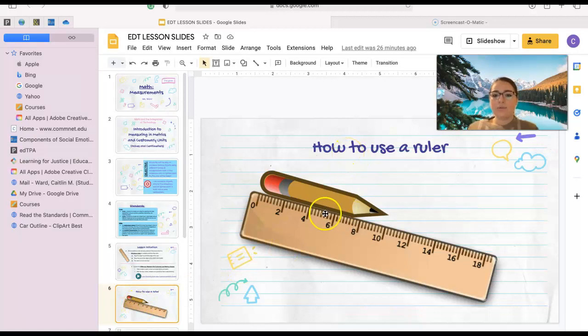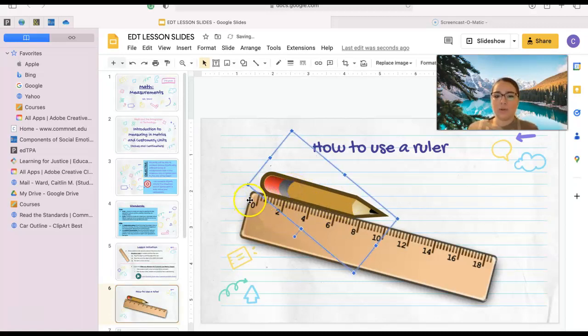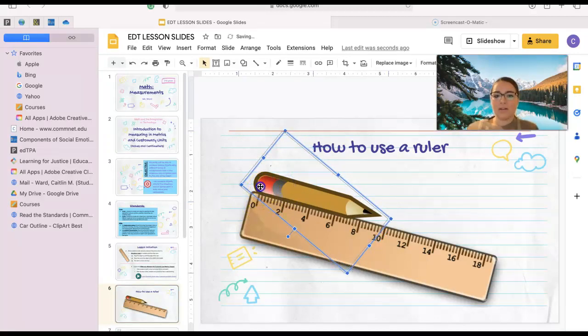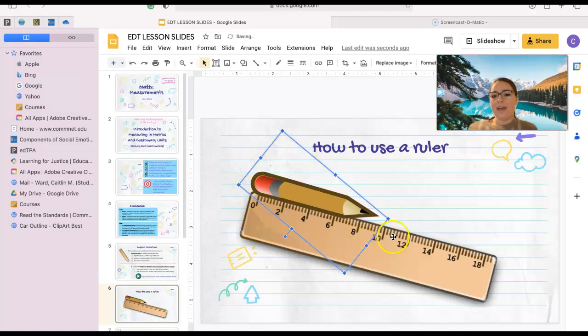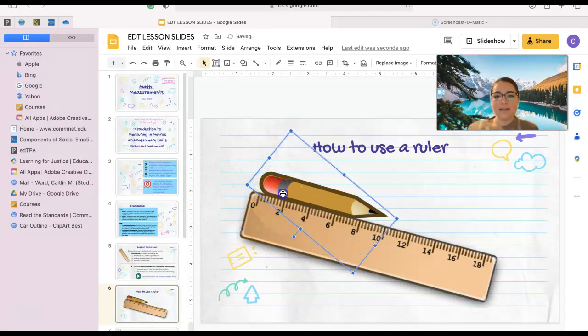So how to use a ruler - like I said before, we want to place our object, so in this case it is a pencil, at the zero hash mark, not the edge of our ruler right here. So if it was at the edge of our ruler like that, then our measurement would be off.